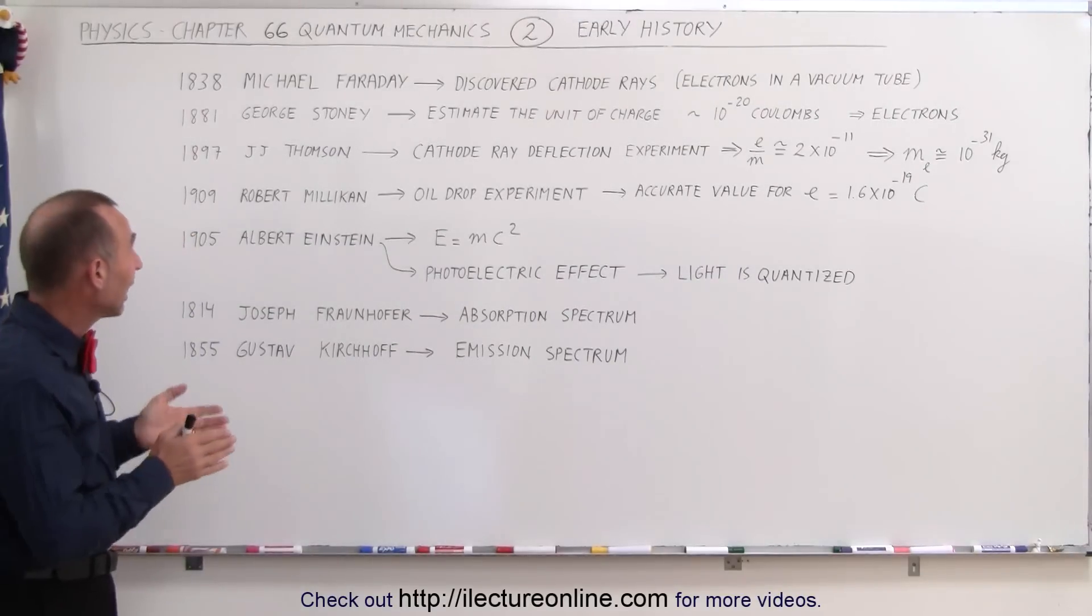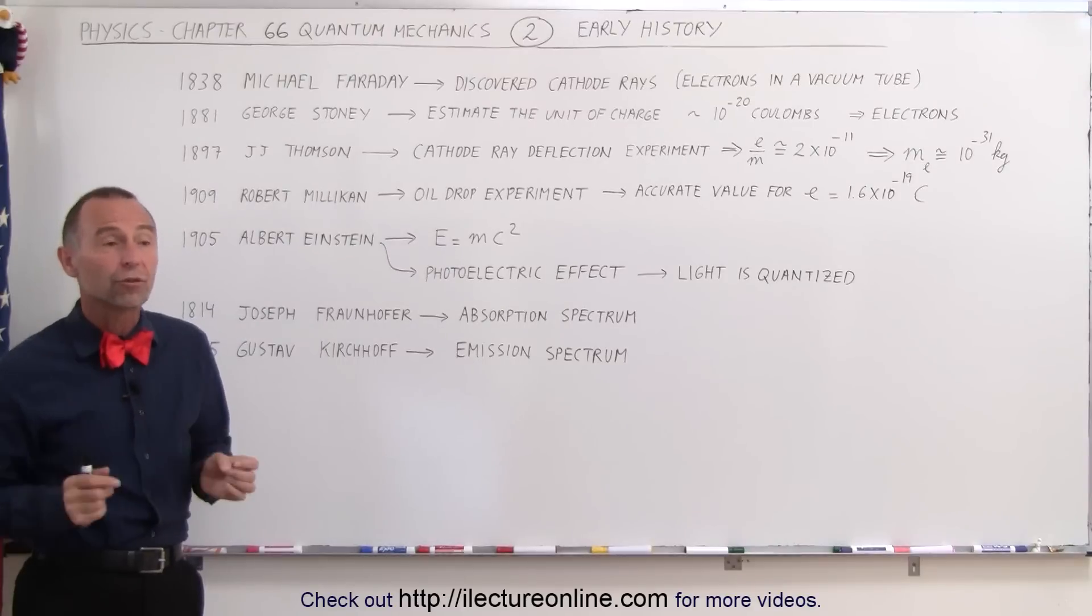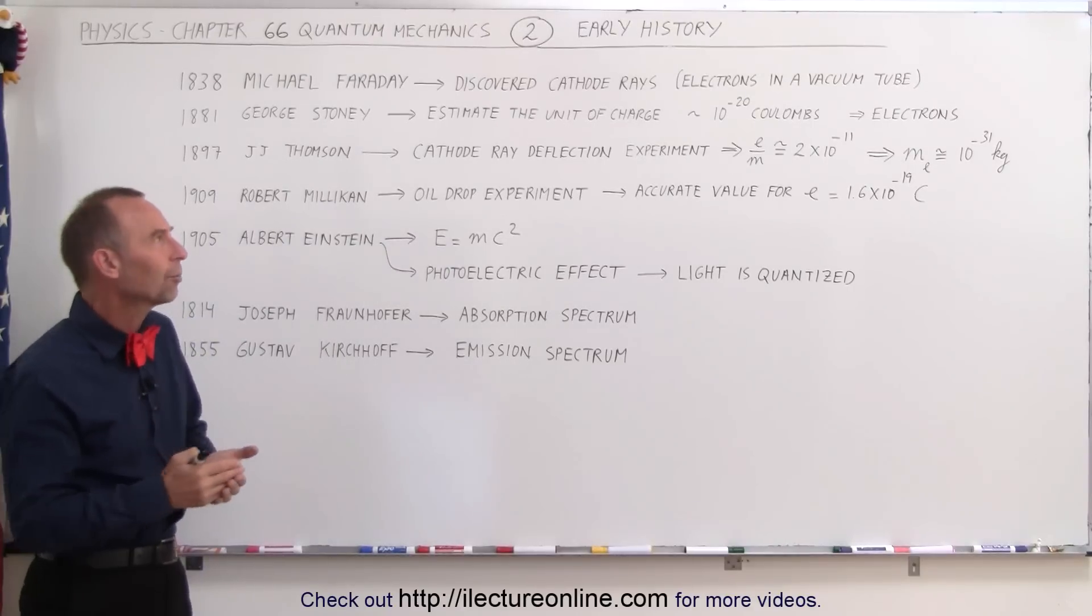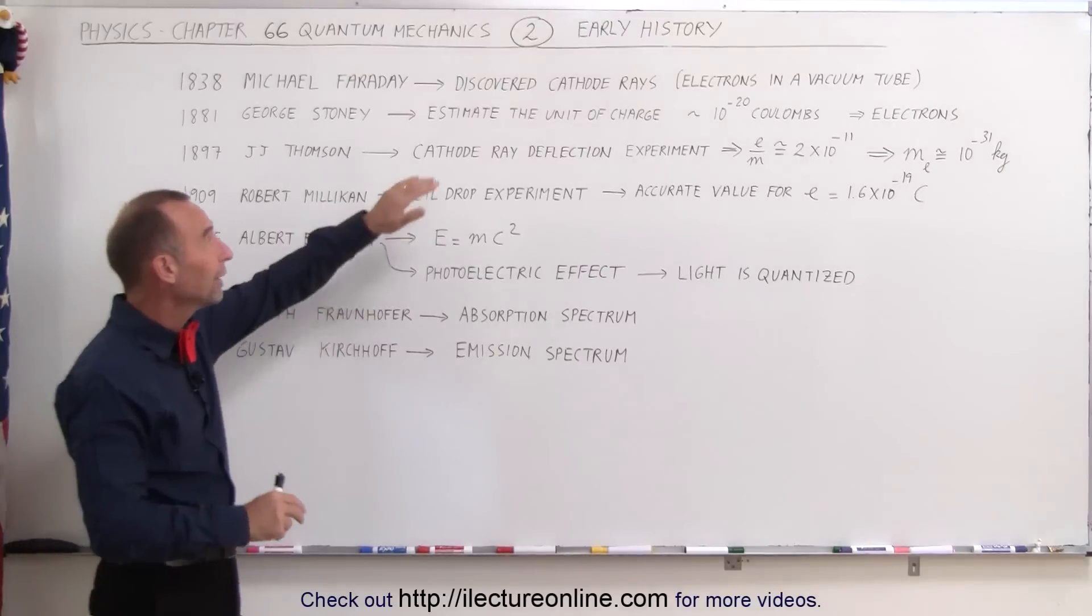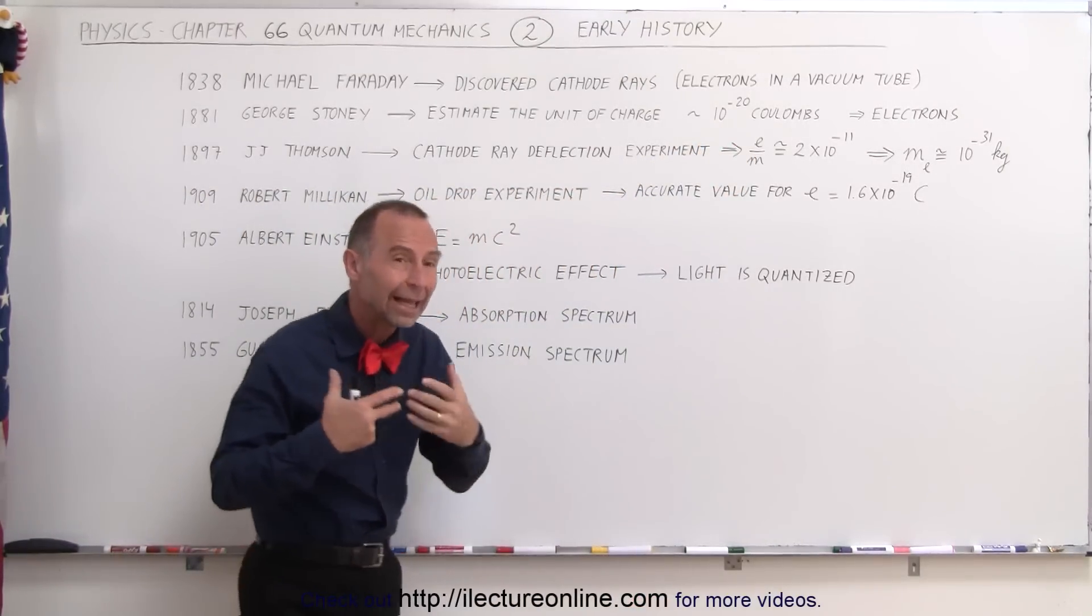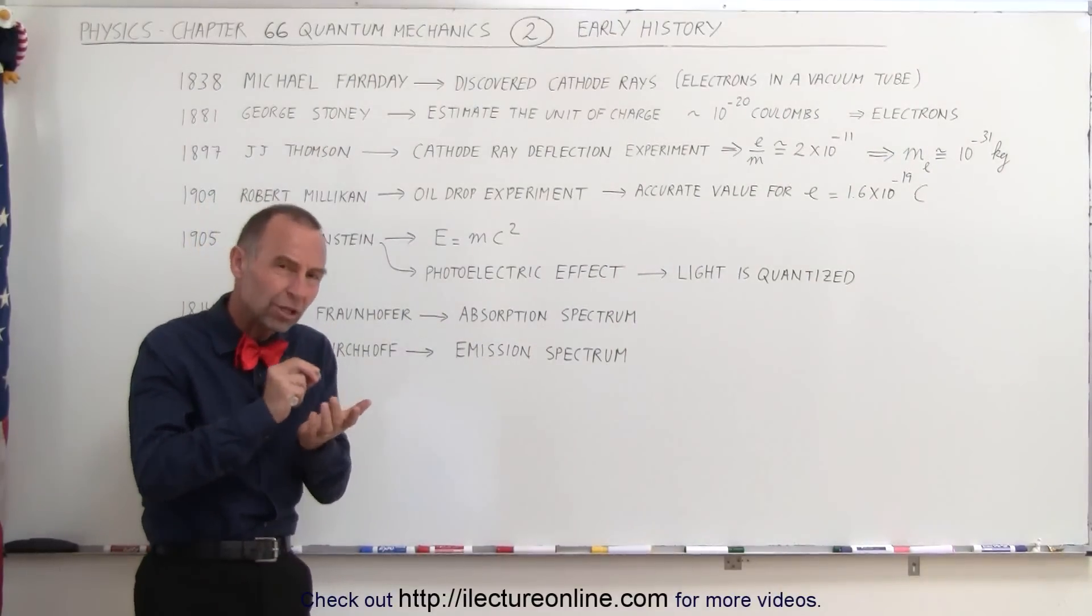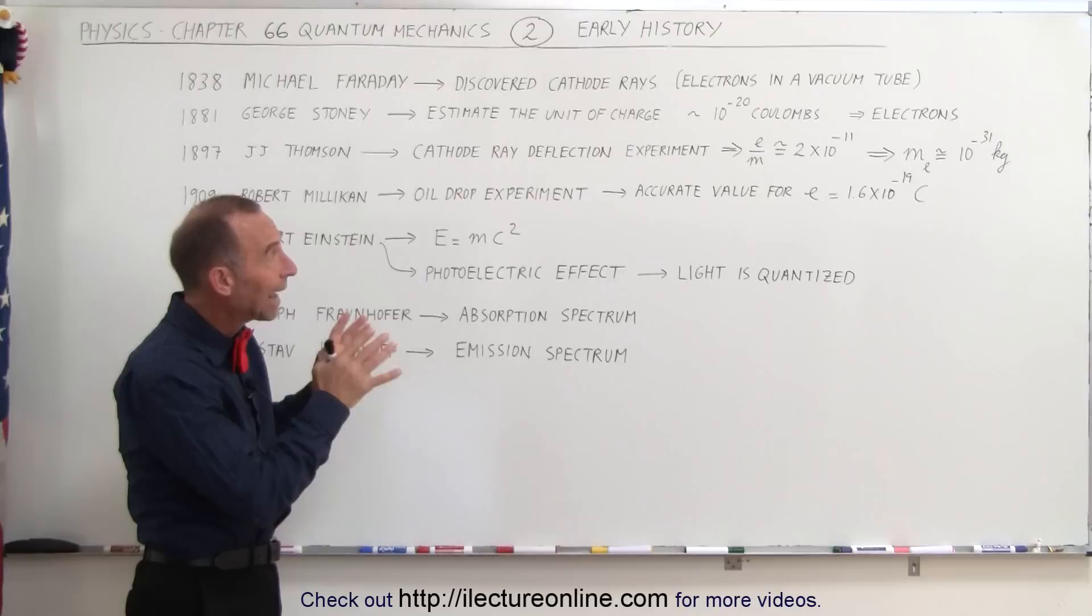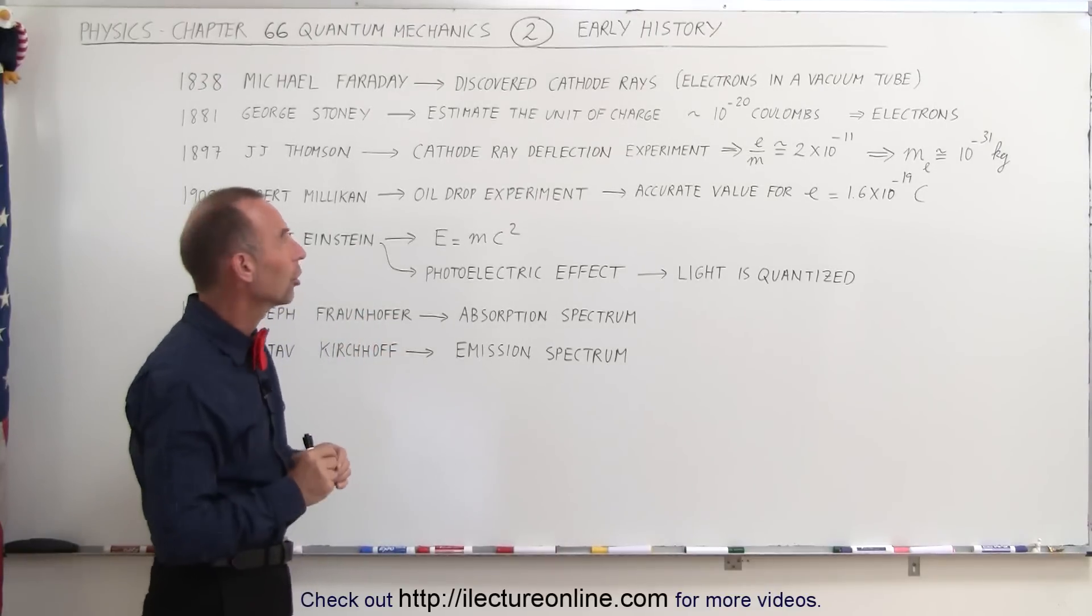Then going to 1881, we have George Stoney, who was able to actually estimate the unit of charge. That was a tremendous accomplishment. He didn't get a very accurate measurement, but he knew that it was somewhere in the order of 10 to the minus 20 coulombs. They ended up calling that charge electrons, so they knew that there was some unitary charge, called it electrons, that had a charge of around 10 to the minus 20 coulombs per charge.